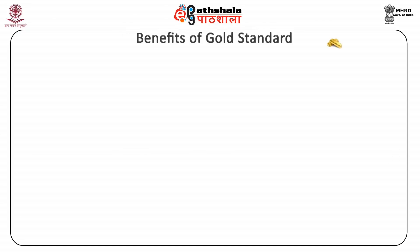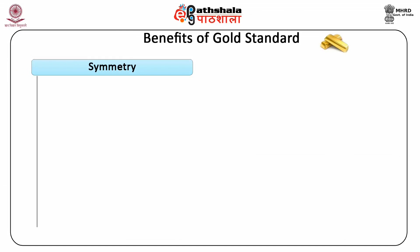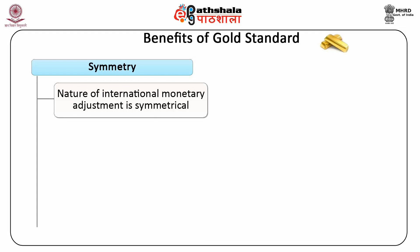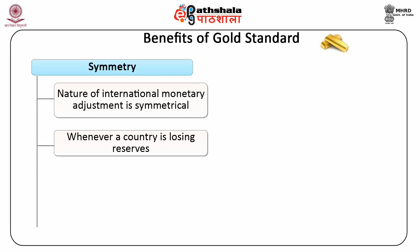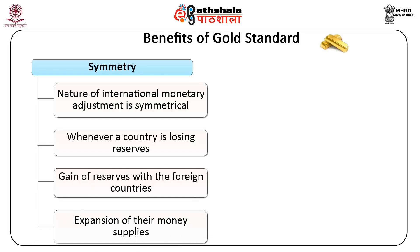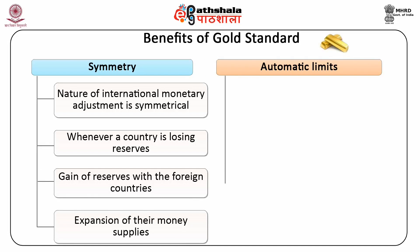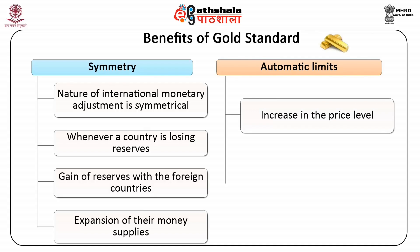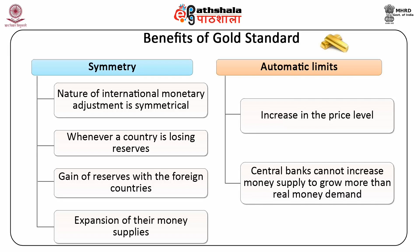As countries expressed the price of their currency in terms of gold, gold became the official international reserve, and the gold standard results in a fixed exchange rate between all currencies. The benefits of the gold standard include symmetry: the nature of international monetary adjustment is symmetrical. Whenever a country is losing reserves, this results in a gain of reserves with foreign countries and expansion of their money supplies. Another benefit is that it places automatic limits on the increase in the price level, as central banks cannot increase money supply beyond real money demand.